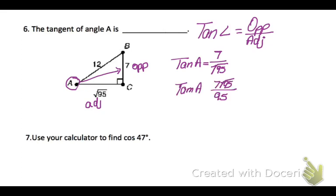So, we're going to rationalize that denominator and get tangent of A equals 7 square root of 95 over 95. Or you could also turn it into a decimal. Now, I want you to use your calculator to find the cosine of 47. So, you're going to find the cosine button. And then you're going to type in 47 and hit the enter button. And you're going to get 0.682.